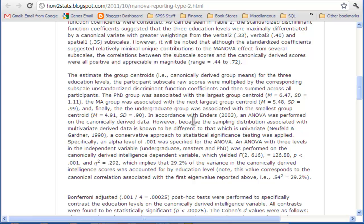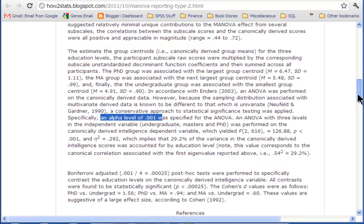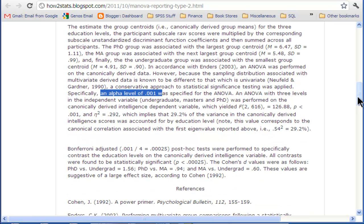In accordance with Enders, I performed an ANOVA on these canonically derived scores. I've also added a Neufeld-Gardner citation noting that aggregated data based on canonically derived functions don't have the same sampling distribution as true univariate variables. So I used a conservative alpha level of 0.001 for the follow-up ANOVA.